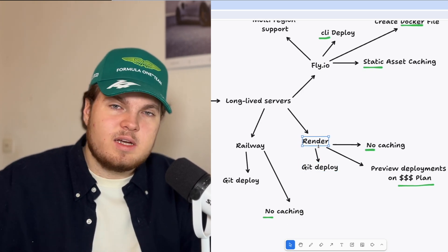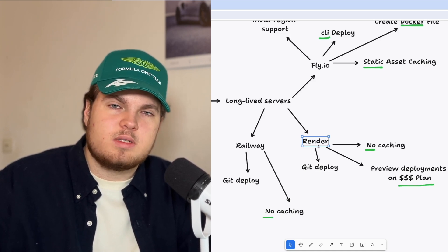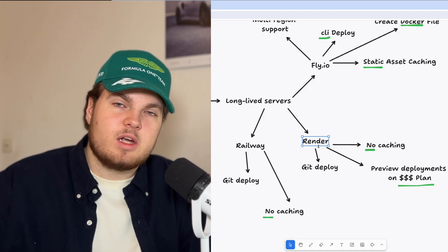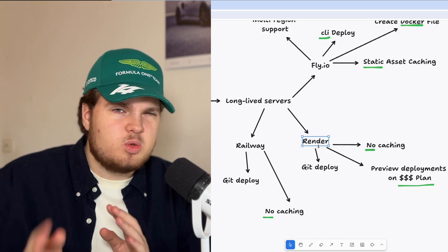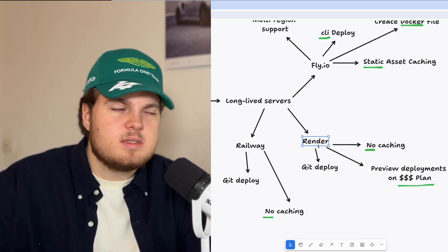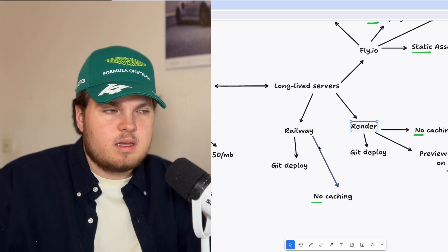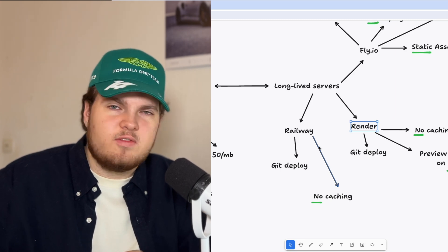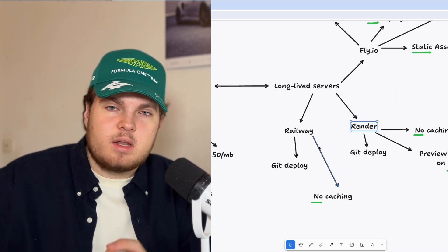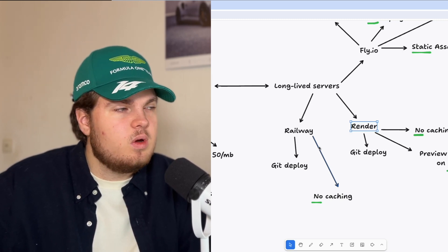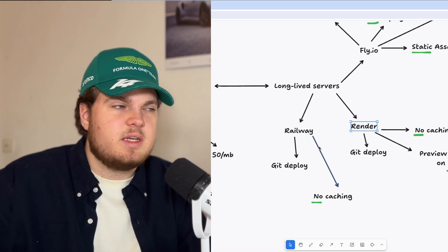Render offers git deploy — push your code to GitHub and everything is done automatically, and in most cases you don't need to create Dockerfiles. Render also supports preview deployments, though only on their paid plan which costs around $20 or $30. Railway is a newer player in the space. Railway also allows you to push code with GitHub, so no separate Dockerfiles needed. The downside is there's no caching, so you have to bring your own CDN like Cloudflare, Fastly, or BunnyCDN.